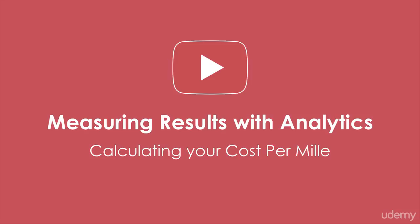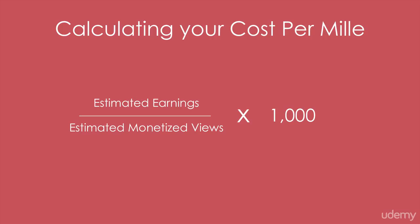There's a simple calculation — an equation you can use to calculate your personal CPM. That is your estimated earnings divided by your estimated monetized views, multiplied by 1,000. Those two stats — estimated earnings and estimated monetized views — are things we saw in the last video, which was about your earnings reports in your Google YouTube Analytics.